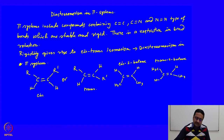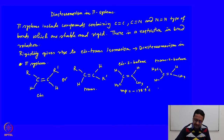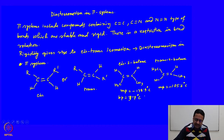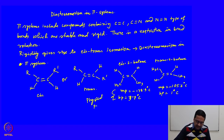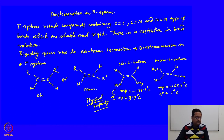These two compounds differ in their melting points. Cis-2-butene melts at minus 138.9 degrees centigrade, whereas trans-2-butene melts at minus 105.6 degrees centigrade. Similarly, the boiling point of cis-2-butene is 3.7 degrees centigrade, whereas the boiling point of the trans isomer is about 1 degree centigrade. This difference in physical properties can be utilized to identify these two isomers.